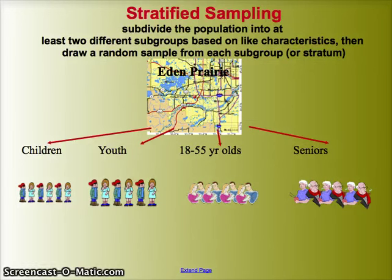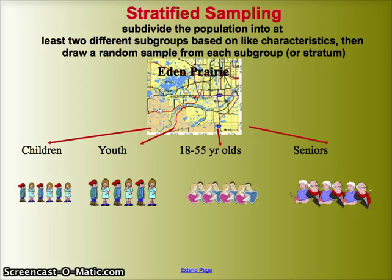Stratified sampling is the second method. It's a good method because it includes random selection. In stratified sampling, we subdivide a population into at least two different subgroups based on some like characteristic. Then we draw a random sample from each subgroup — those subgroups can be called stratums. Let's say I want to do a survey on park use in Eden Prairie. If I just did a simple random sample, it's possible my sample might not include any children or might include only seniors.